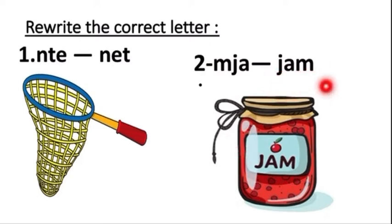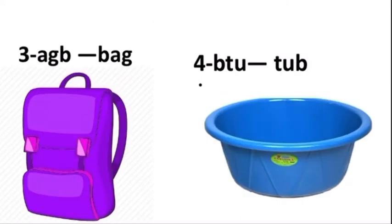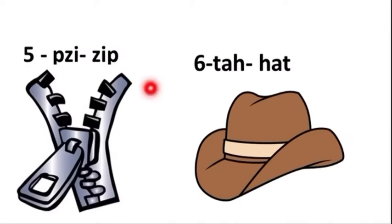Third one, the correct spelling of bag is B-A-G, bag. The correct spelling of tub is T-U-B, tub. Children, you can look at the pictures and guess the correct thing. Next one, correct spelling of this zip is Z-I-P, zip.